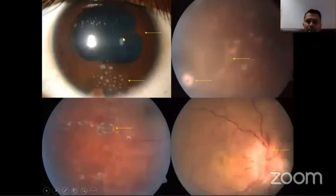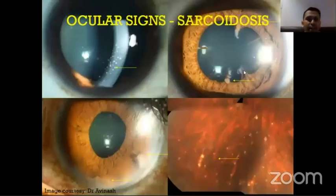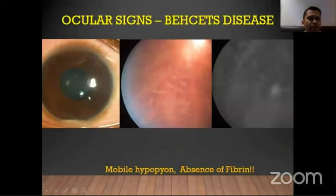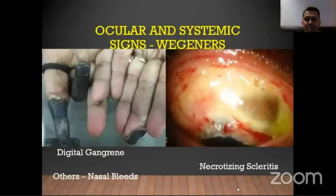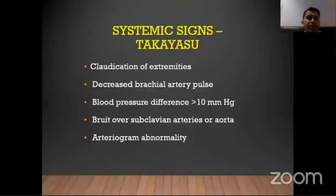Sarcoidosis features: diffuse mutton-fat KPs, pigmented inferior chorioretinal spots, filiform synechiae, and peripheral anterior synechiae. Behçet's disease shows mobile hypopyon without fibrin, flame-pattern vasculitis, aphthous oral ulceration, and genital ulceration. Wegener's granulomatosis shows scleritis and digital gangrene or nasal bleeds. Takayasu's arteritis shows fundal avascularity, neovascularization, feeble peripheral pulses in upper limbs, blood pressure difference more than 10 mmHg between extremities, and bruit of the subclavian artery or aorta.